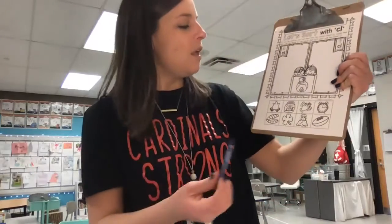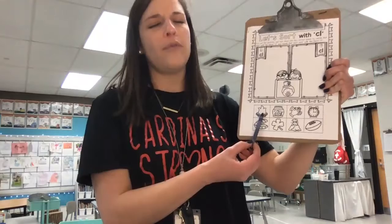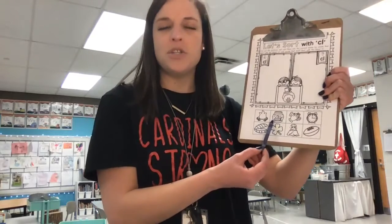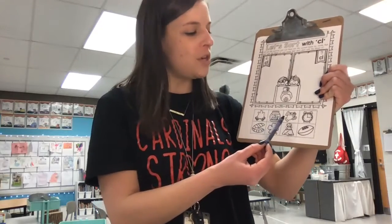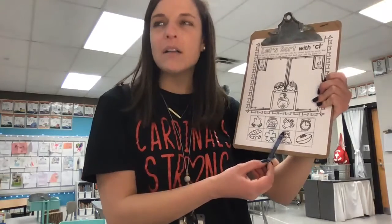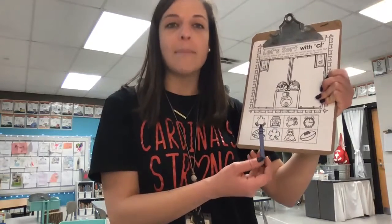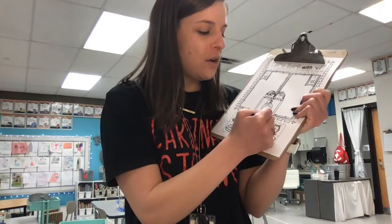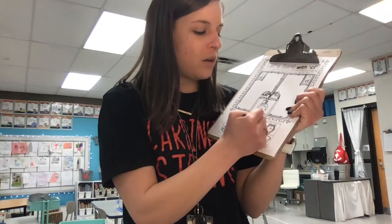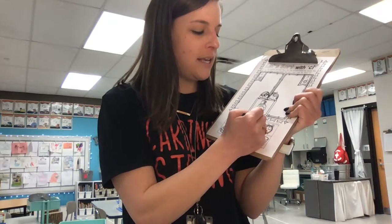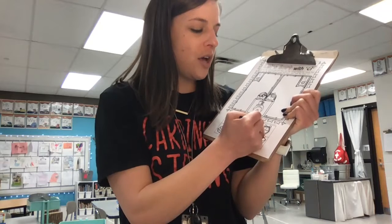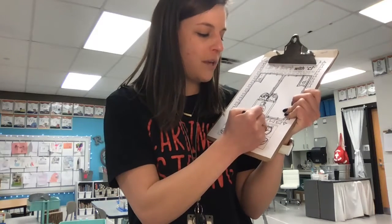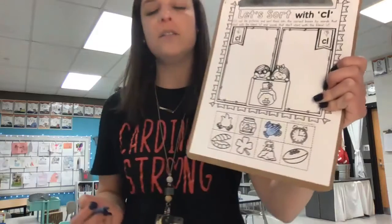So let's do one CL blend picture together. I'm going to take my blue crayon and listen for fire — I don't hear CL in fire. What about in fish? I don't hear it in fish. What about in clap? Clap. Oh, I hear it at the beginning of the word clap — cl-ap. So I'm going to color the hands for the word clap that have the blend CL. Make sure to color nice and neatly, not scribble scrabble, so that we can still see the picture.